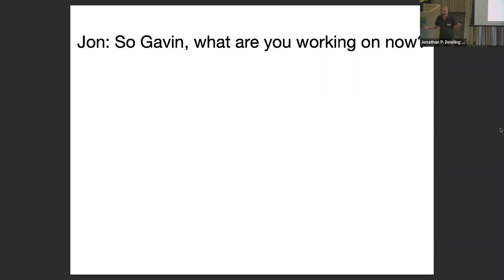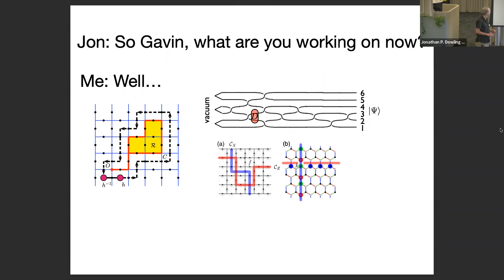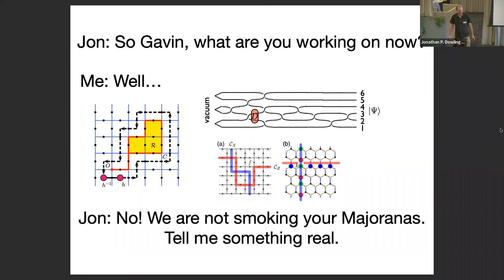This is a typical conversation I had when John would come visiting and drop into my office. He'd ask me, 'So Gavin, what are you working on now?' I'd show him things like anyons — two-dimensional physics where you don't have to follow the same exchange statistics as three dimensions — you can do universal quantum computation, protective quantum memories, grading operations implementable in physical systems. And he would just stare at me and say, 'No, we're not smoking your mire on us.'